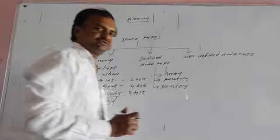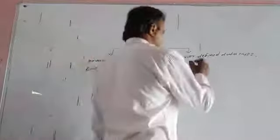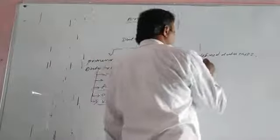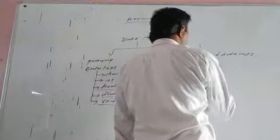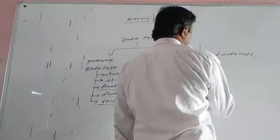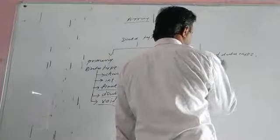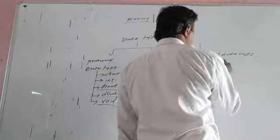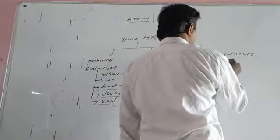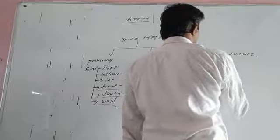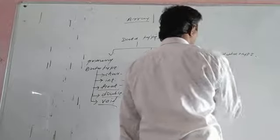The third category is user-defined data types. In user-defined data types there are two types: first, structure; and second, union.